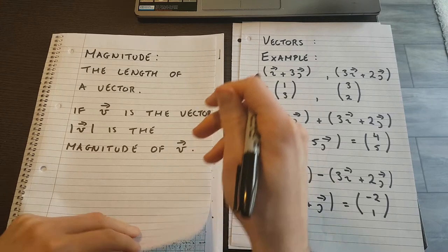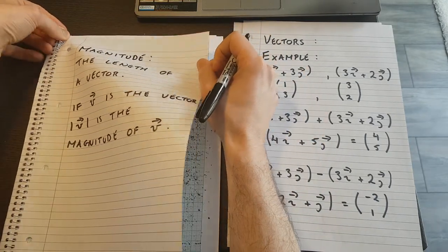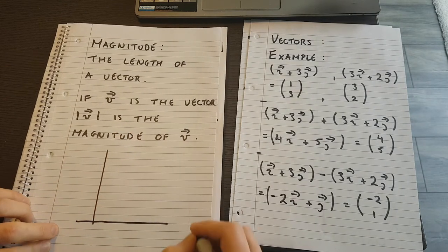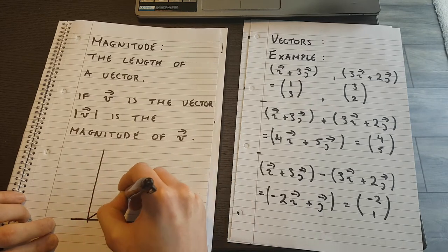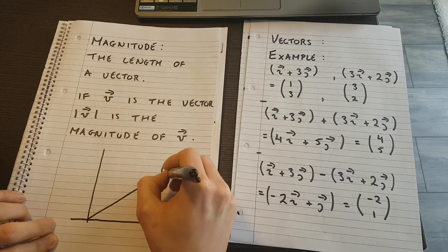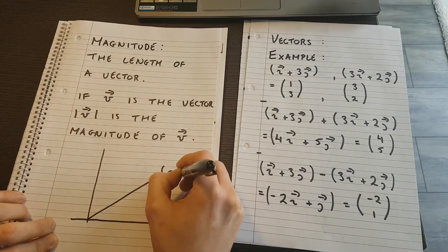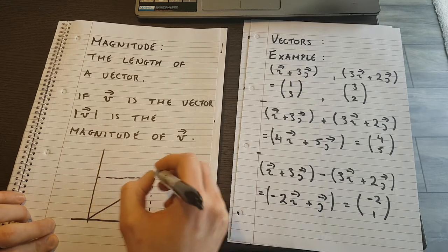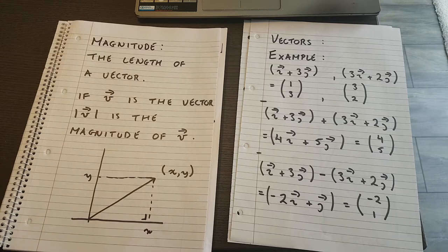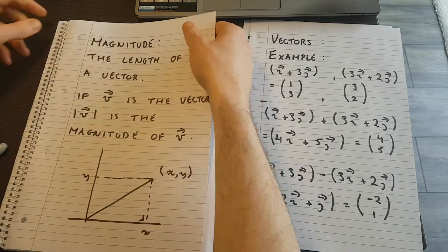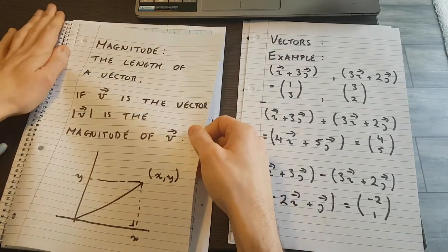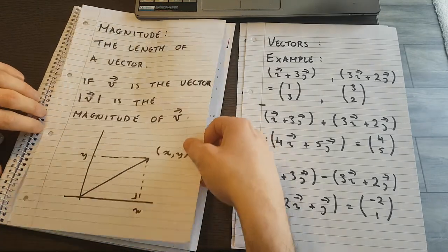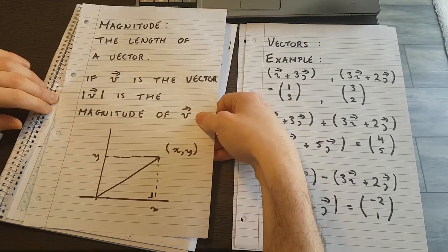So if V is the vector, then if we put a bar on either side of it, that means the length of V, the magnitude of V. And there is a pretty simple formula for this. And it is based on the Pythagorean theorem, which I will show you here in a moment.